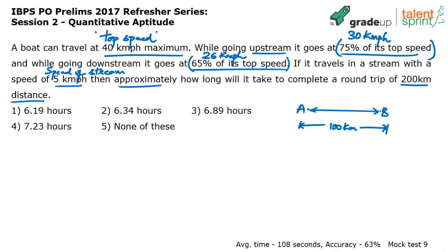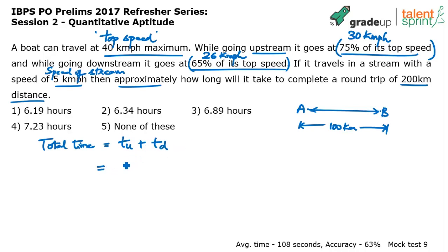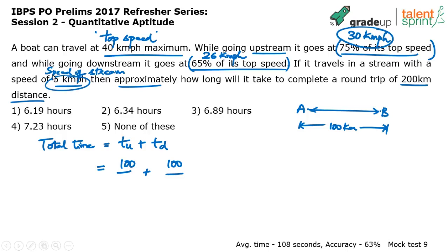We need to find total time. Total time is time taken to go upstream plus time taken to go downstream. Time equals distance divided by speed. The upstream distance is 100. Speed when going upstream is speed of the boat minus speed of the stream: 30 minus 5 equals 25.